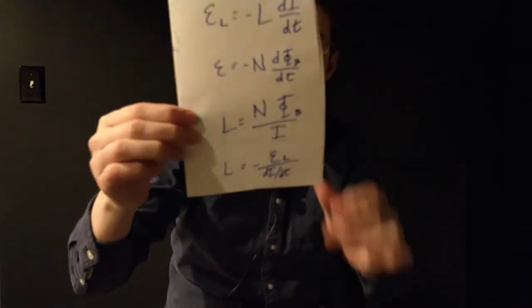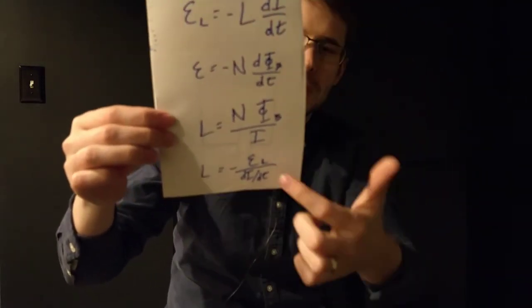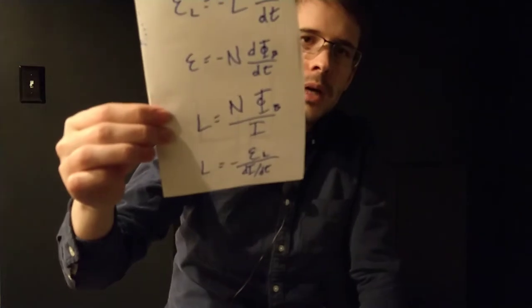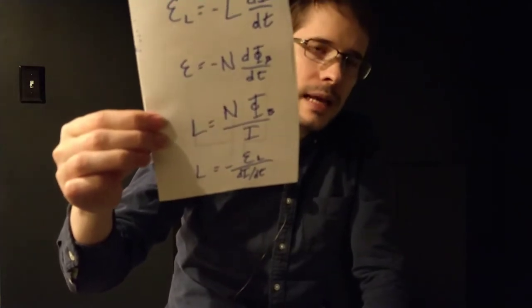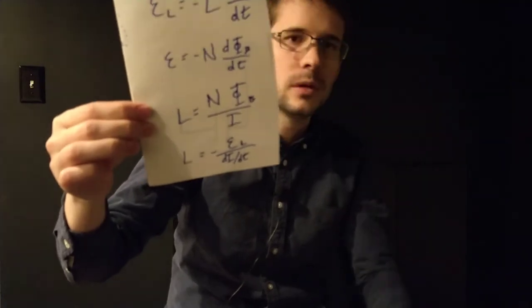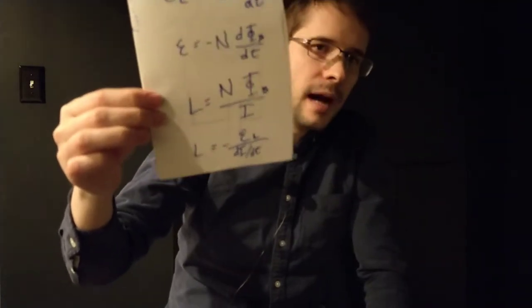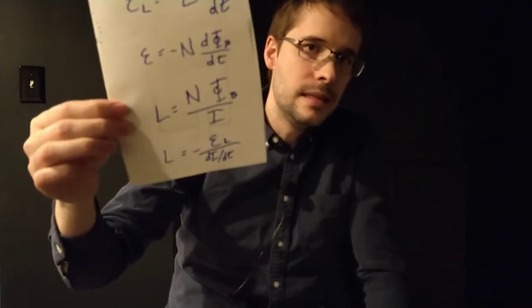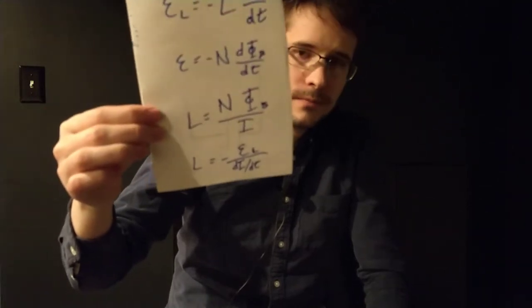If we go back to the first equation and solve for L, we get that L is equal to the induced EMF — the electromotive force backwards inside the loop — divided by di/dt, the time derivative of the current. So the fundamental idea here is that we're talking about how much the inductor resists a change in current. Inductors like to have the same amount of current flowing through them.